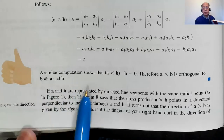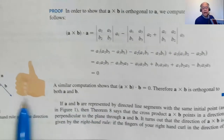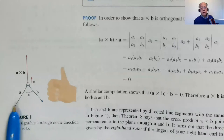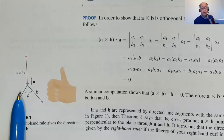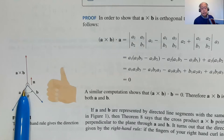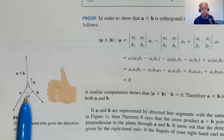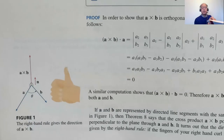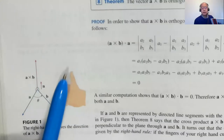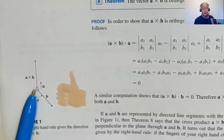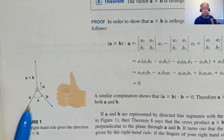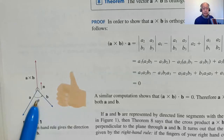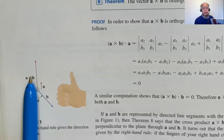The cross product obeys the right-hand rule. If you have A cross B, take your right hand in the direction of A and curl it toward B — your right thumb points in the direction of the cross product A cross B.